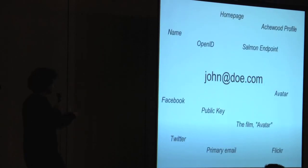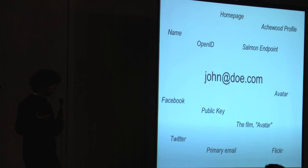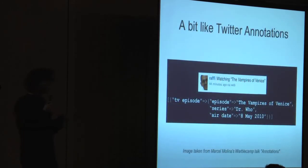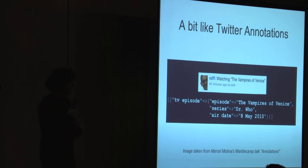You might attach anything to your email — your public key for GitHub, your avatar like what Gravatar does right now. This is just a generalized form of that. You could attach your social networks, your home page, whatever. It's actually a lot like Twitter annotations in concept. It's a very powerful approach to standards where you define the broadest thing possible and then let the community organically figure out the best ways to use it. Annotations are just key-value pairs on tweets, and I think that's going to be really successful.